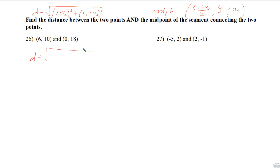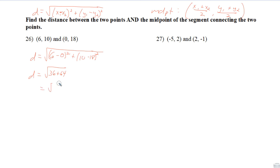The distance between the two points equals the square root of (6 - 0)² + (10 - 18)². That's 6² + (-8)², which is 36 + 64 = 100, so the distance is 10.